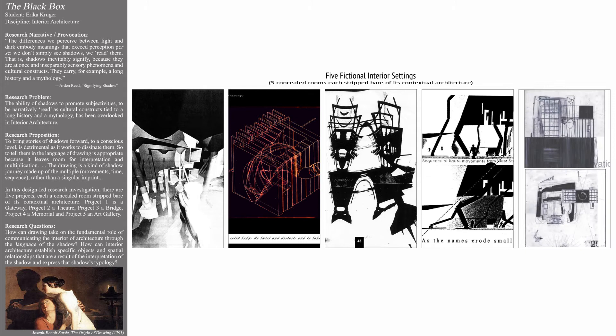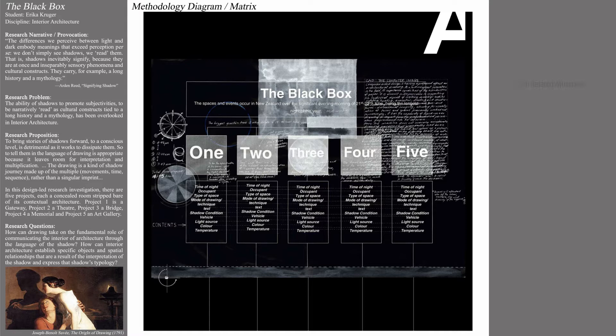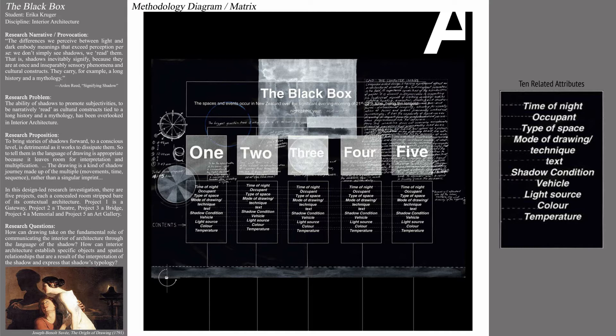Erica framed her methodology as five projects, each a concealed room stripped bare of its contextual architecture. As a narrative-led research thesis, Erica proposed a different fictional inhabitant for each of five fictional interior settings. She began by creating a methodology diagram that assigned ten related attributes of the five stories she planned to tell: time of night, occupant, type of space, mode of drawing technique, text, shadow condition, vehicle, light source, color, and temperature.